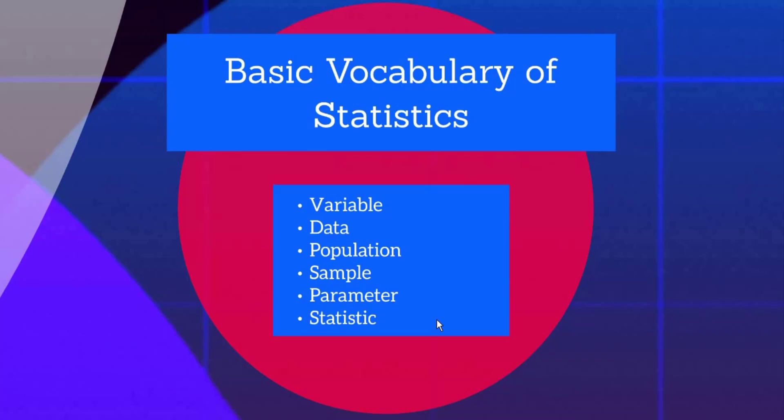So, what is variable? It is the characteristics of an item or an individual. For example, height of students, weight of students in a class or some weight of a mechanical part in a car. All these come under variables.